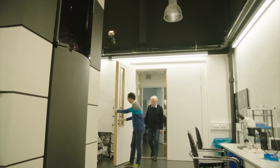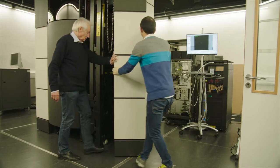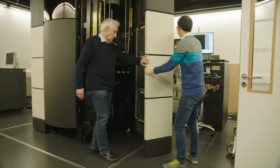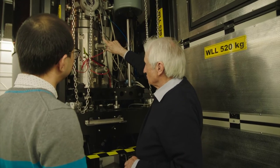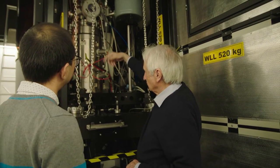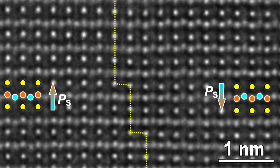Knut Urban, together with Max Haider, implemented the first aberration-corrected conventional transmission electron microscope. The magnification achievable in this way is up to about a million times.